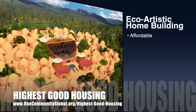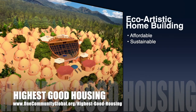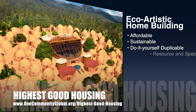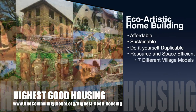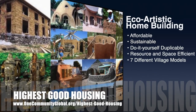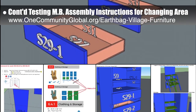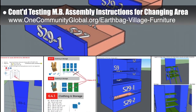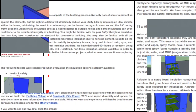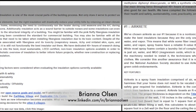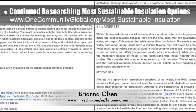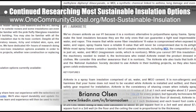One Community's approach to highest good housing is eco-artistic home building that is affordable, sustainable, do-it-yourself duplicable, resource and space efficient, and consists of seven different sustainably constructed village models. This week, the core team did another round of testing the Murphy bed assembly instructions for the changing area — what you see here are the errors we found. Brianna Olson, sustainability researcher, completed her fifth week researching the most sustainable insulation options.